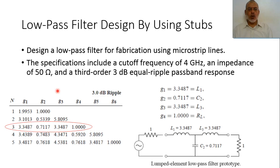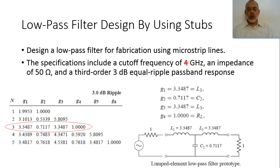Now, let us apply all what we have said about filters to design a low-pass filter using stubs. This is required to design a low-pass filter for fabrication by using microstrip lines. We are not going to use lumped elements, but instead use microstrip line stubs. The specifications include a cut-off frequency of 4 GHz, an impedance of 50 ohm, and a third-order 3 dB equiripple passband response.